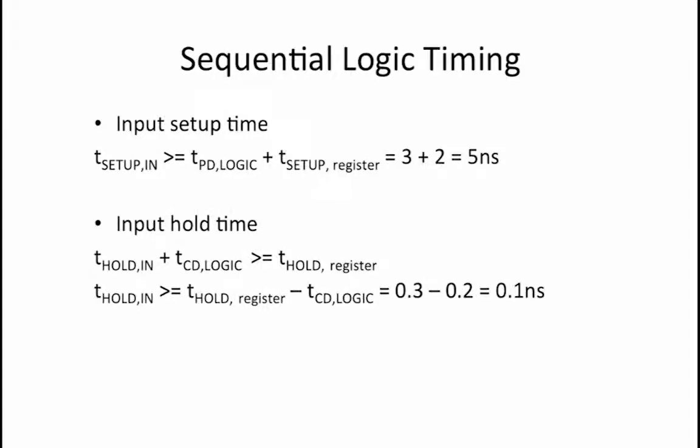So thold of n plus tcd of the logic are greater than or equal to thold of the register. This can be rewritten as thold of n must be greater than or equal to thold of the register minus tcd of the logic, which equals 0.3 minus 0.2, and that equals 0.1 nanoseconds.